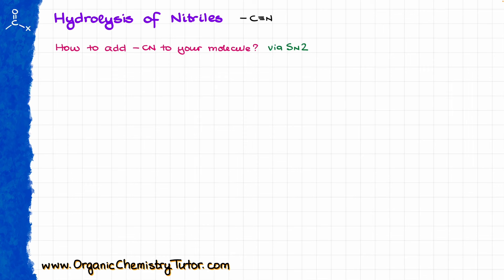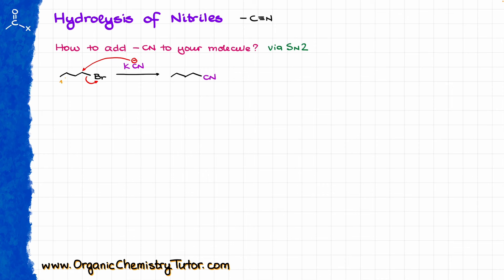So if I have some sort of alkyl halide — let's say butyl bromide — I can do an SN2 reaction using potassium cyanide (KCN) in an appropriate solvent, such as DMSO, DMF, or THF. The cyanide comes in and replaces the bromine, giving me the corresponding nitrile. Something very important to notice here is that we are adding an extra carbon to our molecule. If I number my carbons from the left end, I had four carbons to begin with, but now I have five carbons, because the CN group brings a carbon with it.